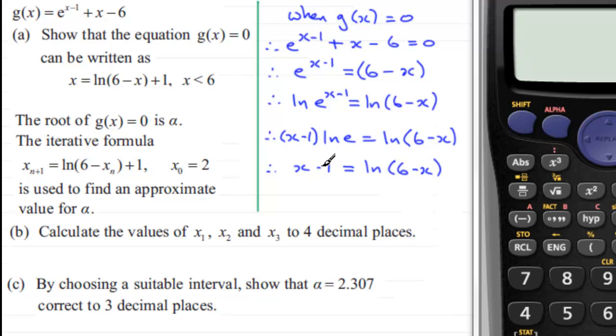And you can see now if we add 1 to both sides, we end up with x equals the natural log of 6 minus x and then plus 1.